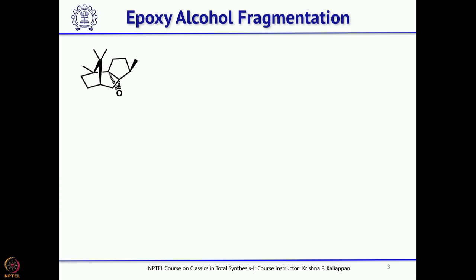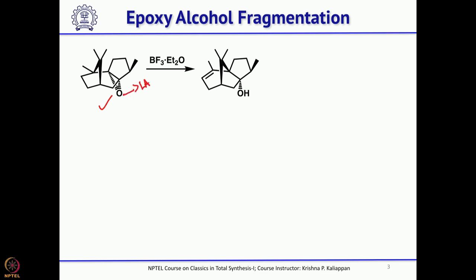The epoxy alcohol fragmentation was a very clever reaction utilized by Holton in the total synthesis of Taxol. He started with a commercially available epoxide called petuline oxide. His idea: when you treat this epoxide with BF3 etherate, the Lewis acid coordinates with the oxygen, the epoxide breaks, and then this bond migrates — the bond that is anti to the leaving group, that epoxide.